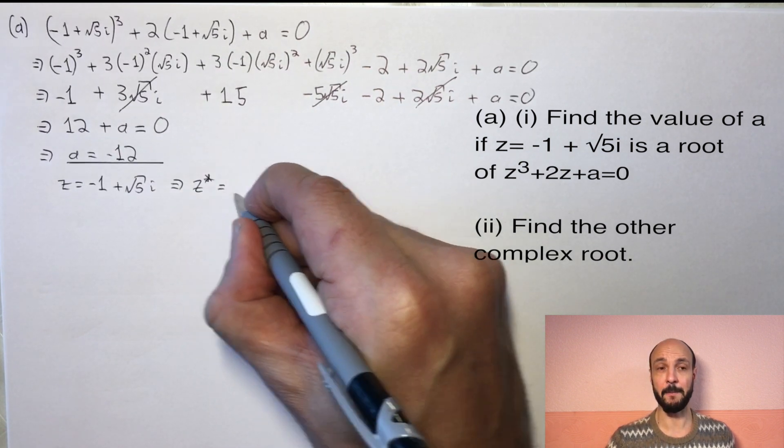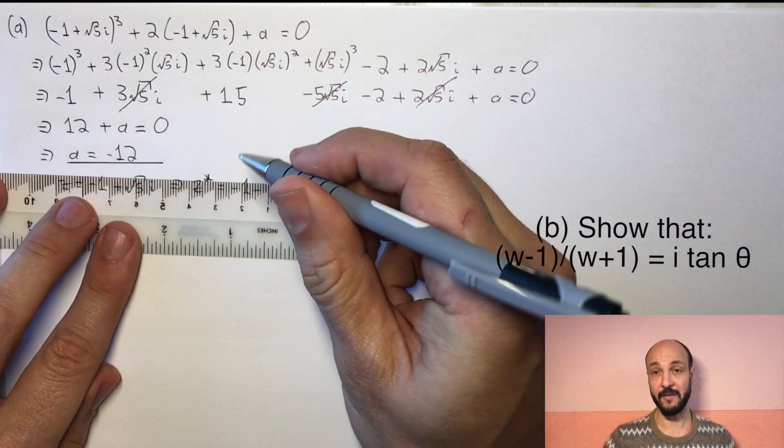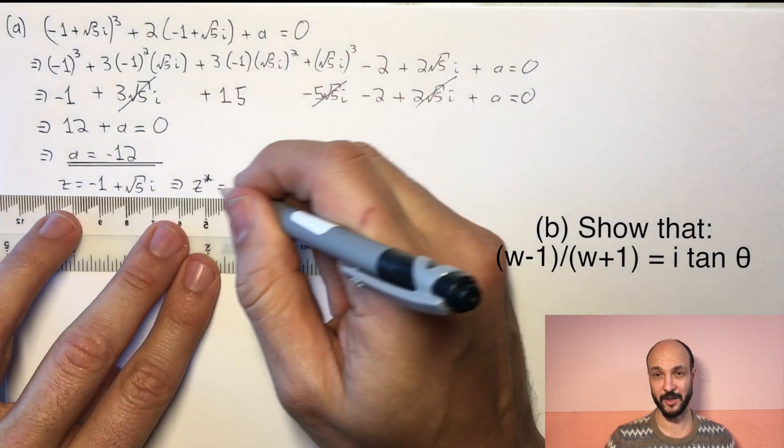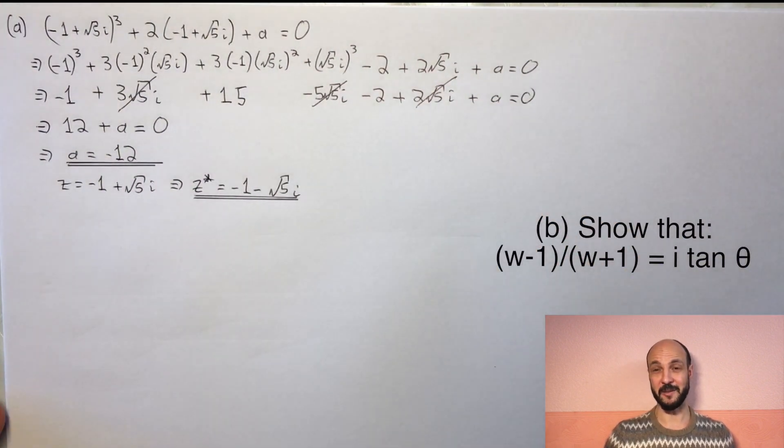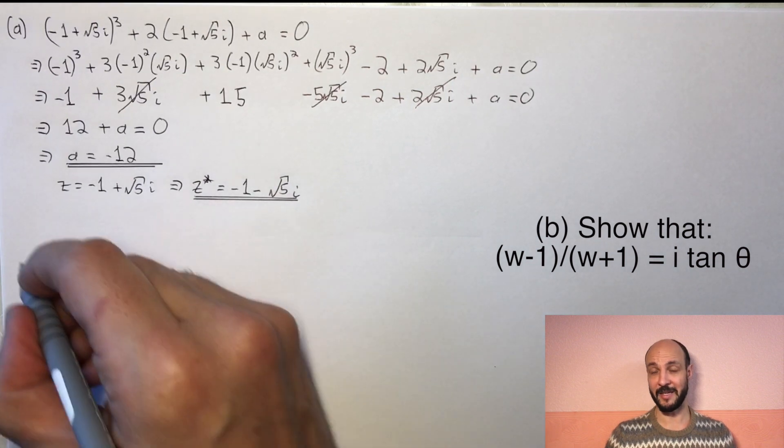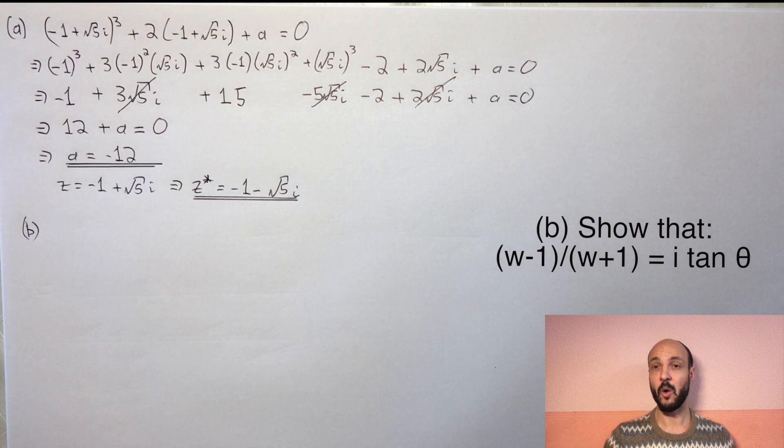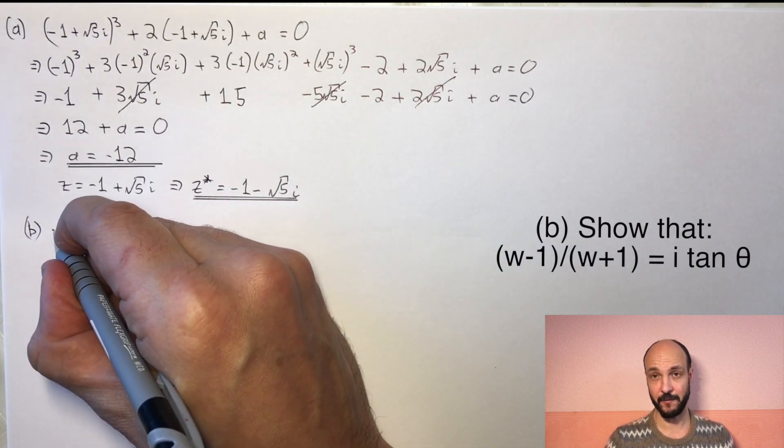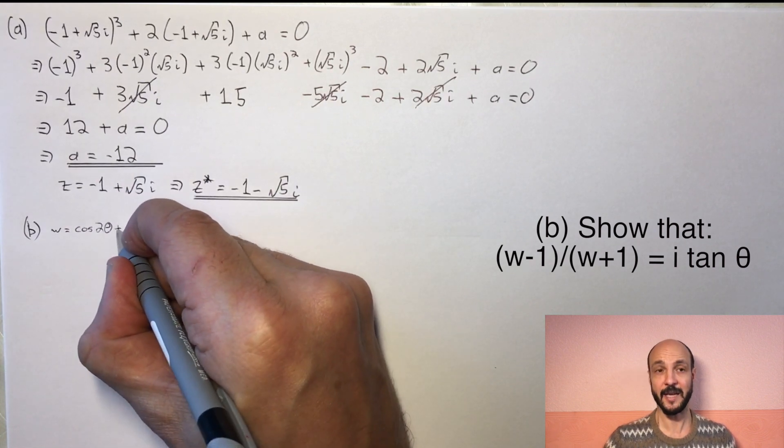So now to part (b). Again there are several ways we could approach this. We're given the modulus and argument, so we're going to be dealing with the polar form somehow. We can look at putting this in trigonometric form straight away, or we can use exponential form first. I'm going to use the exponential form first, as that's a simpler solution. Either way, you would get the marks.